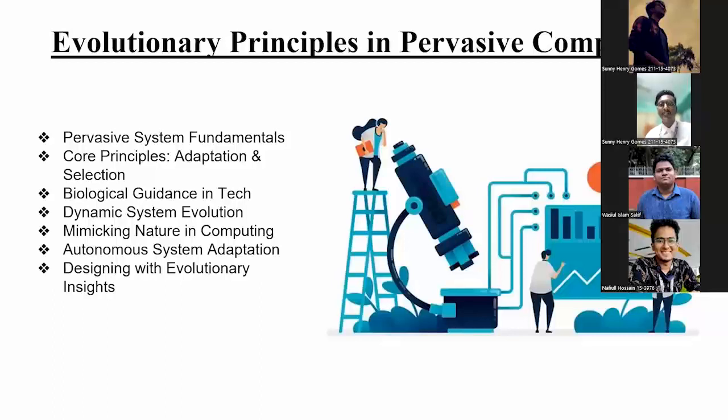These principles aren't confined to nature alone; they form the backbone of our tech evolution. Nature serves as an invaluable guide in tech design. We're witnessing a fascinating biological guidance in technological innovation. The essence lies in autonomous adoption. Pervasive systems possess the incredible ability to adapt without direct human intervention. Understanding evolution isn't just an academic exercise; it's a cornerstone of system design. Evolutionary insights aid the creation of adaptable, efficient, and responsive systems.